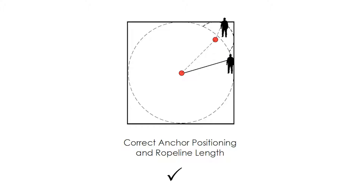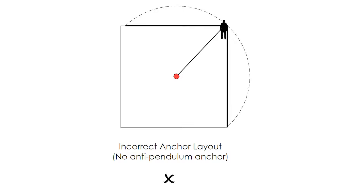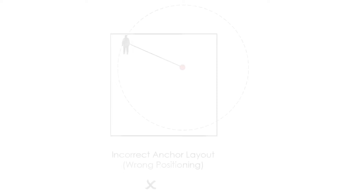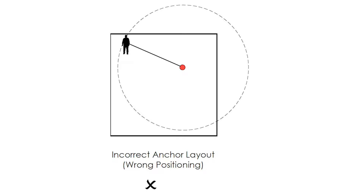A corner or anti-pendulum anchor is required to allow the operator to extend the rope lanyard to the extreme corner whilst attached to the anti-pendulum anchor. Without the anti-pendulum anchor, the operator will set up a pendulum fall situation with catastrophic consequences should a fall occur. Anchors positioned incorrectly will set up a pendulum fall situation, and care must be taken when laying out the fall arrest system to avoid this.